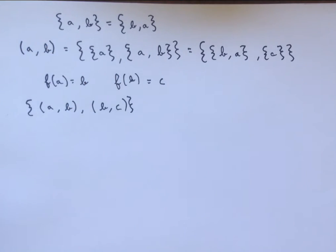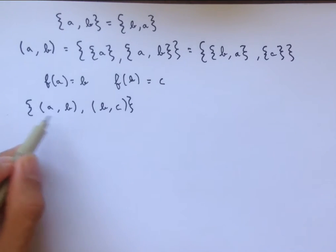And so now if we want to find the image of A through F, we find the ordered pair that contains A as its first element, and so that's this ordered pair. And then we look at the second element of that ordered pair, and that's B, and so that lets us know that F of A is equal to B.